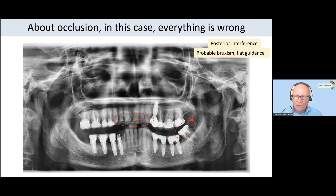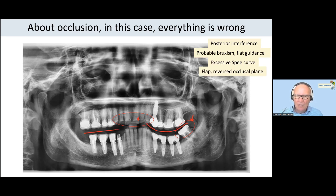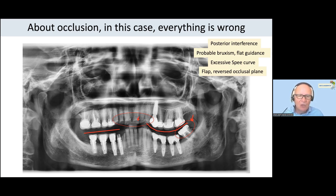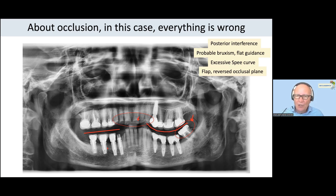And how is the bruxism for this patient? Perhaps we have to control it before putting the implant. With excessive curve of Spee on the left part, with a completely flat occlusal plane, reversed in inclination. Everything is wrong here. But it is a nice implant. But the understanding of occlusion is zero.